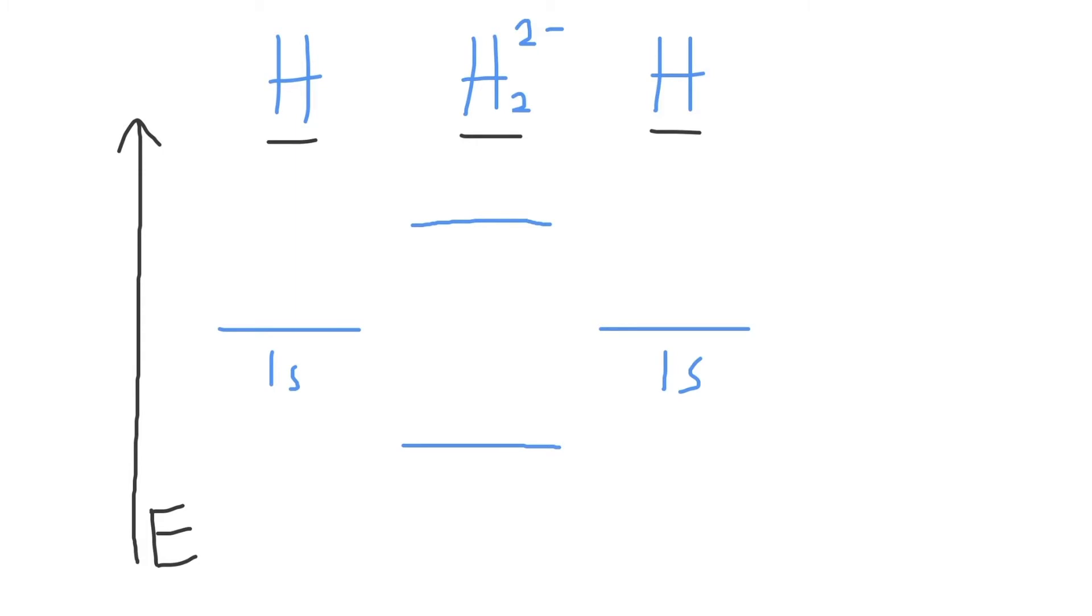The molecular orbital that is lower in energy is a bonding molecular orbital called the sigma 1s bonding molecular orbital. And a molecular orbital that is higher in energy is an antibonding molecular orbital known as the sigma 1s star antibonding molecular orbital. Remember to connect your original atomic orbitals with your newly formed molecular orbitals.